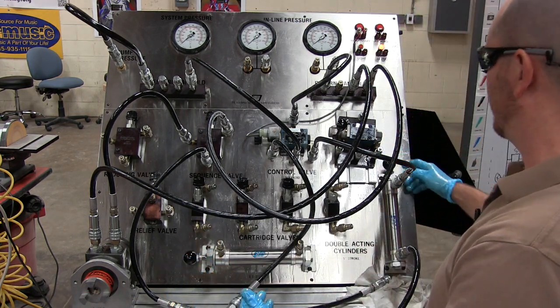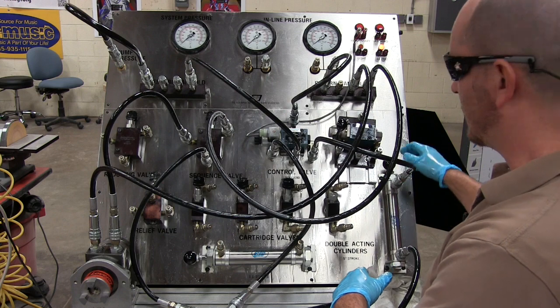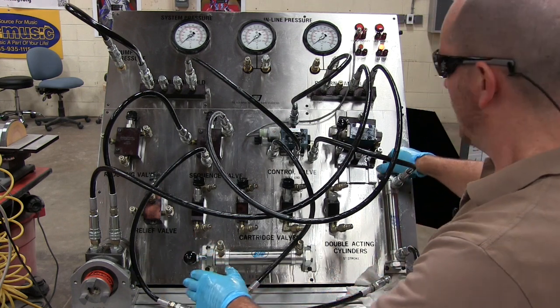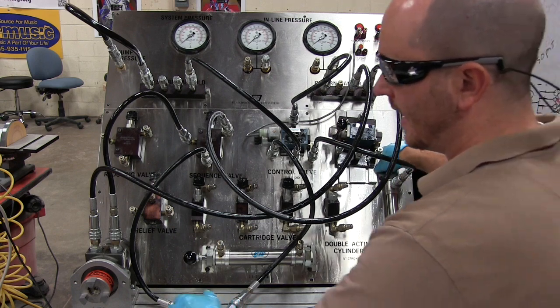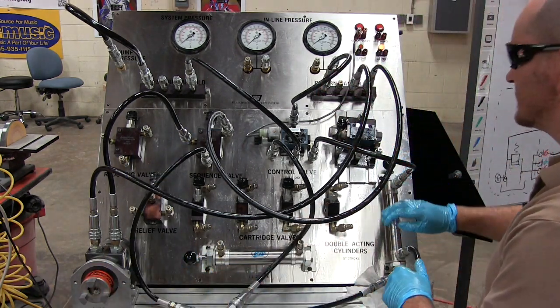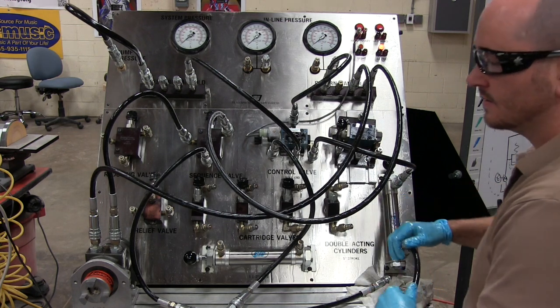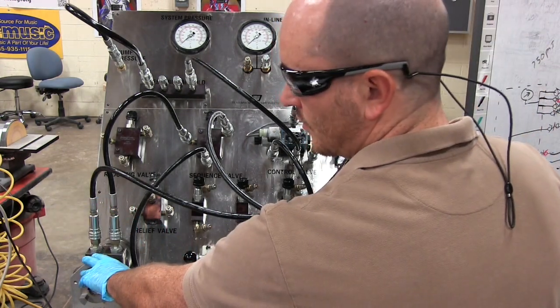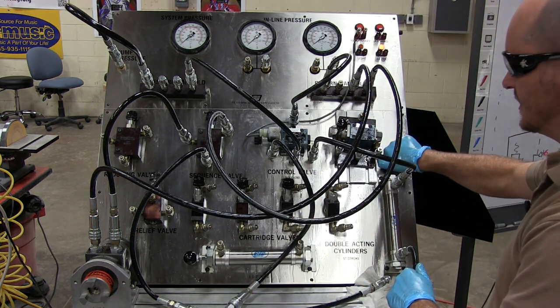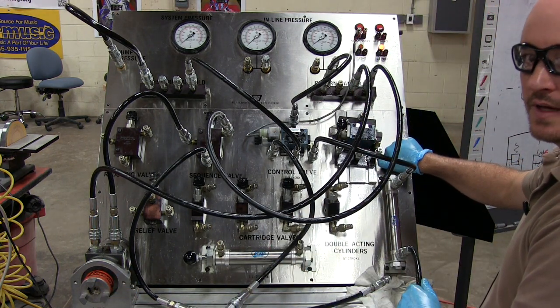Another example would be a clamp and drill or a clamp and rotate where it has to be clamped all the way. Then my hydraulic motor sequence is on. So the sequence is cylinder extends, motor runs. As soon as this thing is not in the extension position, the motor shuts off.